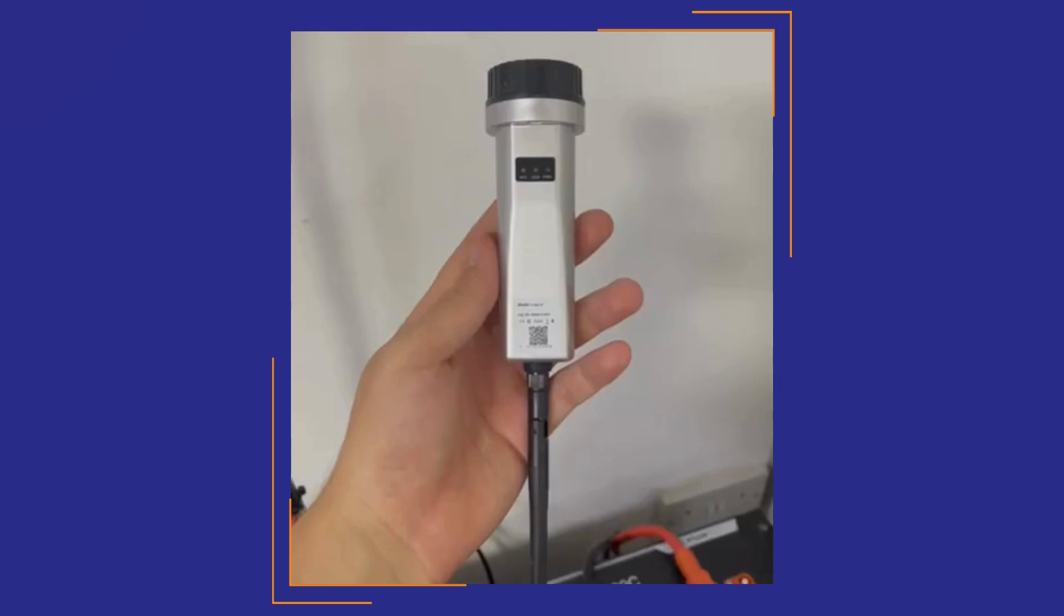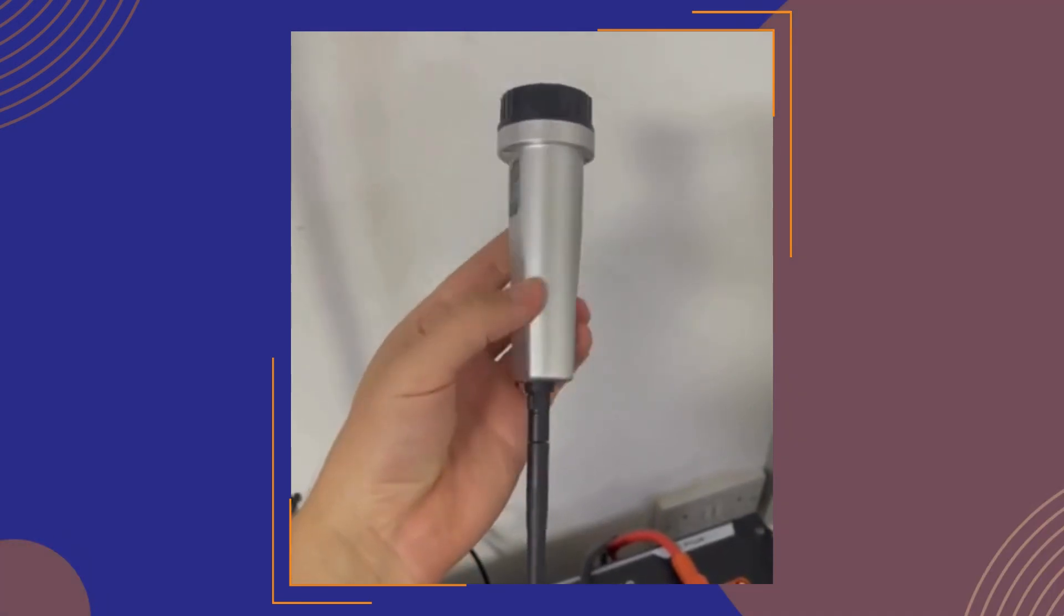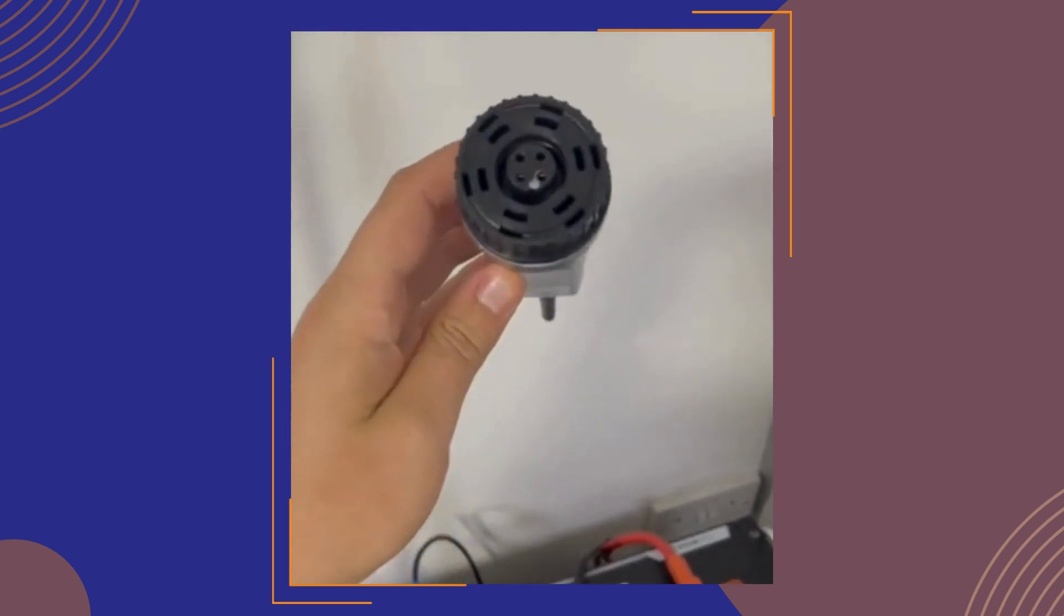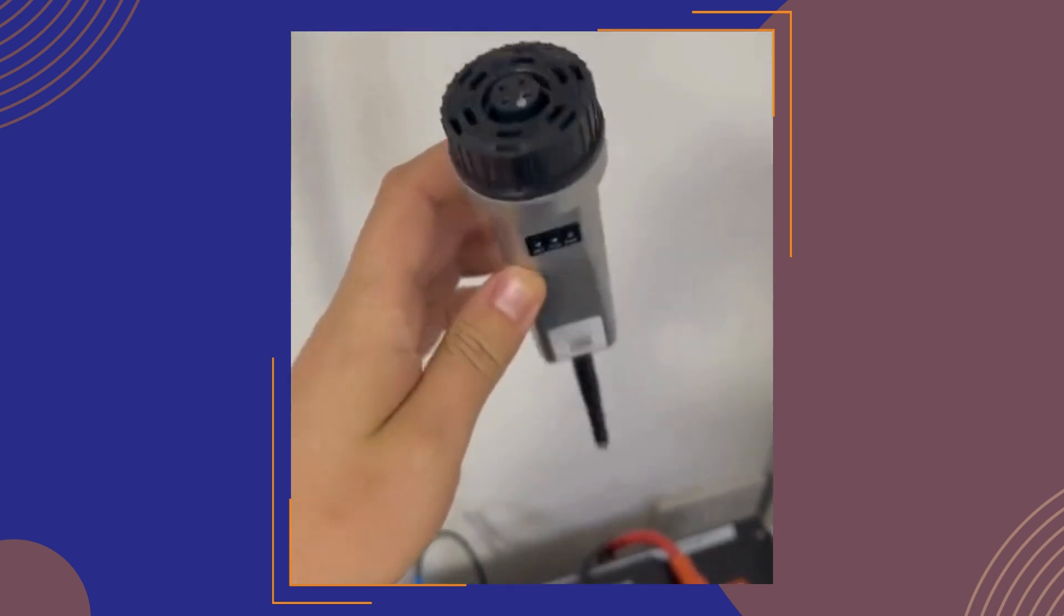This is the datalogger unit. As you can see, it comes equipped with a reset button, three LED lights, four pin holes for the connection, and an antenna to connect to your wifi.